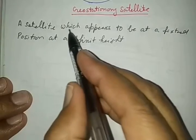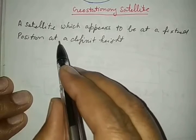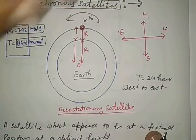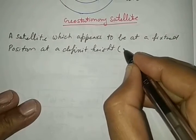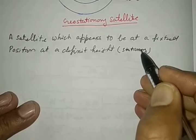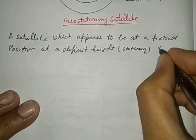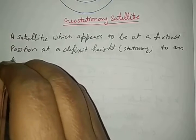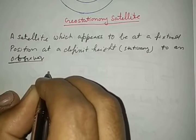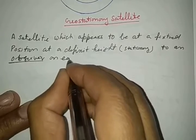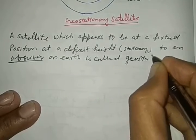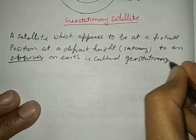We may say that a satellite which appears to be at a fixed position at a definite height will be stationary with respect to the Earth. An observer on Earth sees it as a geostationary satellite.